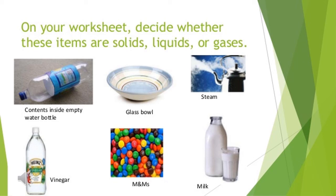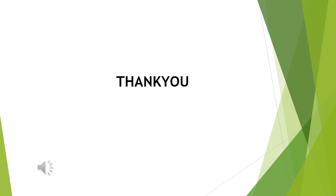Now I am giving you a worksheet. You have to decide whether each item is a solid, liquid, or gas. The items include an empty plastic bottle, a glass bowl, steam, milk, and vinegar — figure out which is solid, which is liquid, and which is gas. Also, purchase the Fundamental Chemistry book endorsed by the University of Cambridge Examinations. Go to the chapter on solid, liquid, and gas and try to solve the questions given after each unit. This is your homework and exercise.